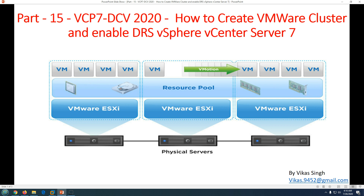The first thing we need to understand is what is a cluster and what is DRS. A cluster is basically a group of ESXi hosts, or physical nodes, which work together to run the virtualization infrastructure. For example, if you have a cluster with three nodes and one host fails, the virtual machines will still remain running and will migrate from one host to another to provide failover.